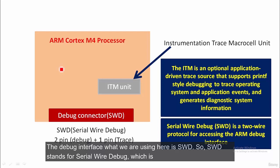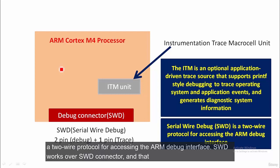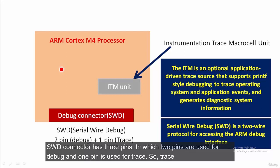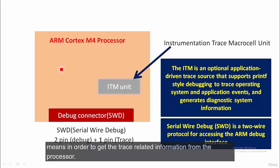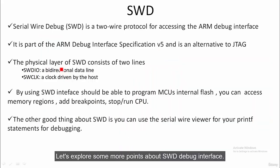The debug interface we use here is SWD, which stands for Serial Wire Debug — a two-wire protocol for accessing the ARM debug interface. SWD works over an SWD connector that has three pins: two are used for debug and one optional pin is used for trace, to get trace-related information from the processor.